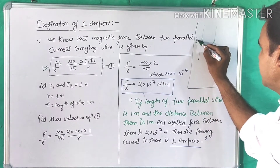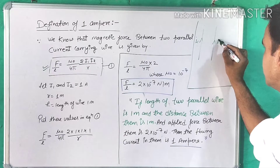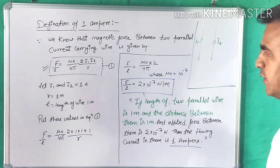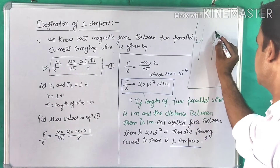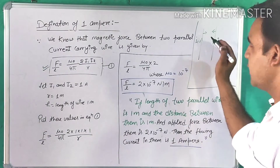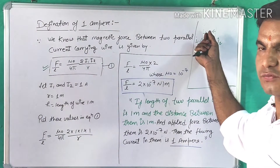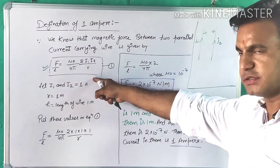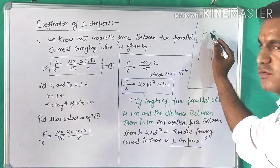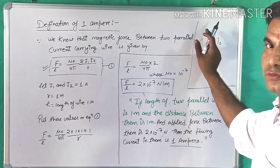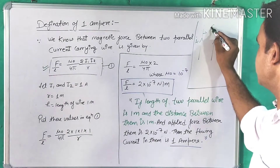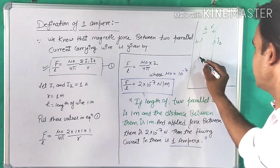These parallel conductors are carrying current I1 and I2, and the directions of current will be same. In this situation, the magnitude of force was equal, but the directions of force will be opposite — F1 and F2 are equal and opposite.